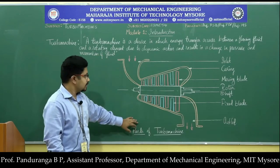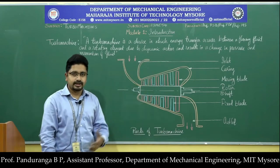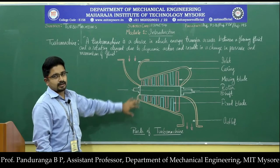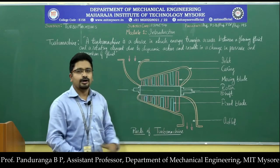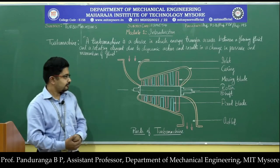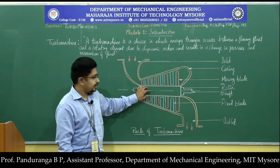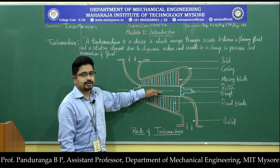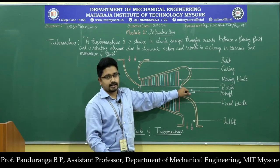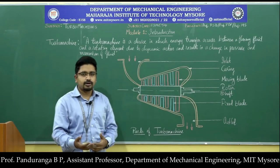Now let us see the parts of a turbo machine. Here I have a diagram — a schematic representation of a steam turbine. It's an axial flow impulse turbo machine. These components are the parts most commonly present in all turbo machines; few may be absent in some turbo machines. The most important part is the rotor — this is the rotor drum. The moving blades are mounted on the rotor drum. The rotor drum is connected to a shaft, which will either provide or absorb mechanical energy.